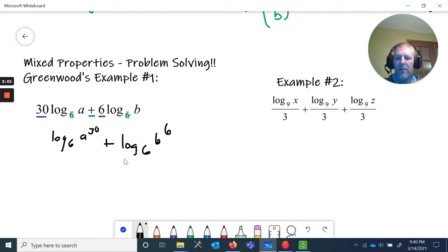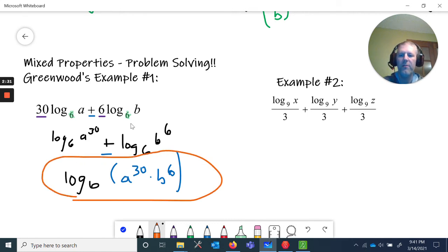Okay, so now we've got everything here. I've got a log base six of some stuff and a log base six of some stuff. Notice it's added together, so addition is going to condense to multiplication. So now I can condense this even more to log base six of - and I'll put some parentheses in here - a to the 30th power times b to the sixth power.